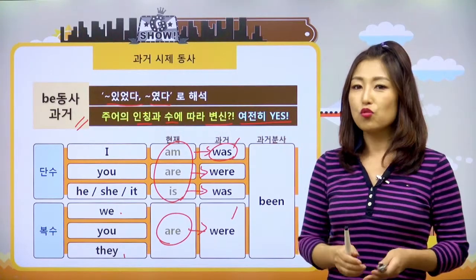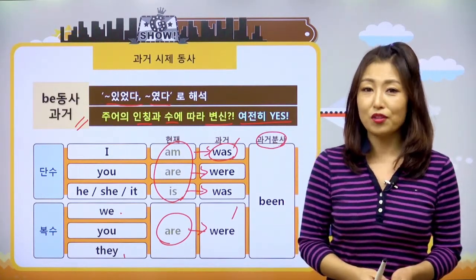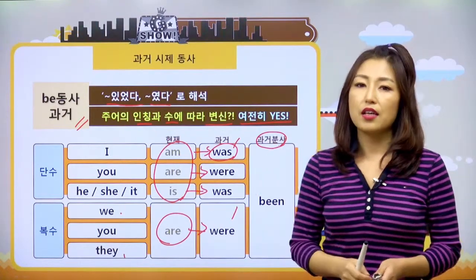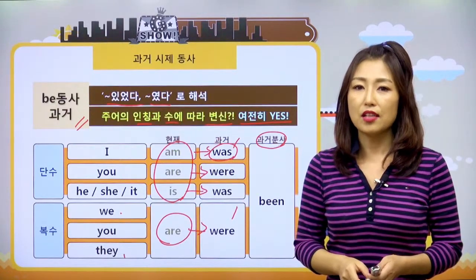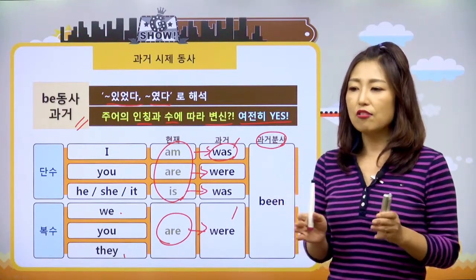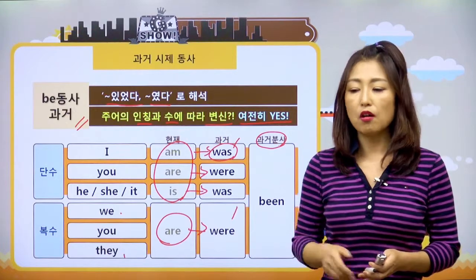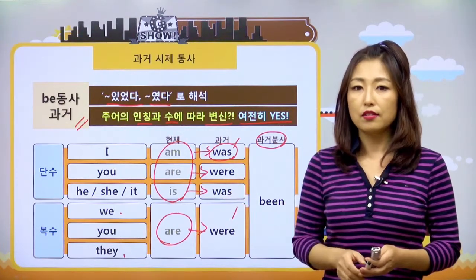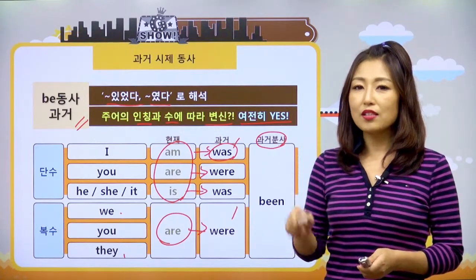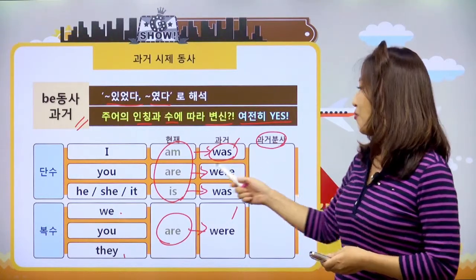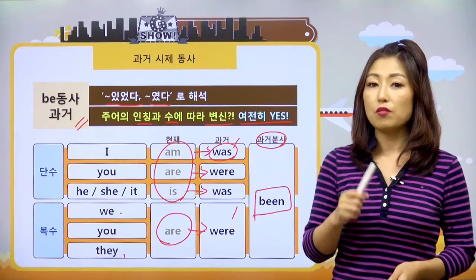was나 were를 주어에 따라서 맞춰서 사용을 하면 되고요. 선생님이 여기 과거분사라고 해놨고 우리가 비동사 편에서 과거분사를 공부하기도 했었죠. 지금 동사의 과거 시제를 얘기하면서 과거분사에 대해서 한 번 더 얘기할 텐데, 과거분사는 과거보다 더 과거의 일을 이야기할 때 사용돼요. 과거분사의 특징은 혼자서는 사용이 안 돼요. 다른 아이들과 섞여서 써야 해요.